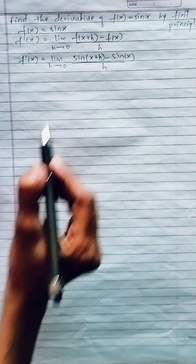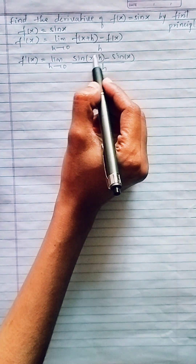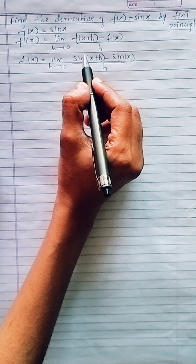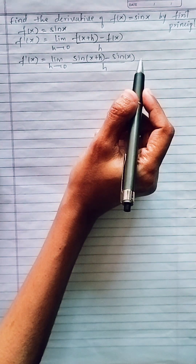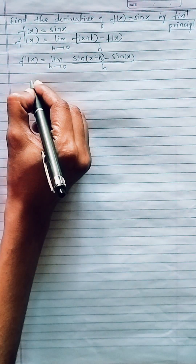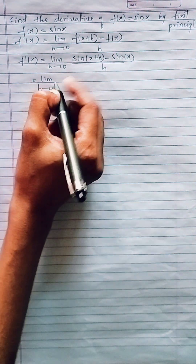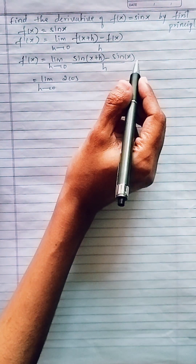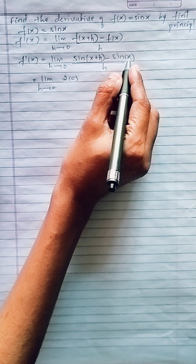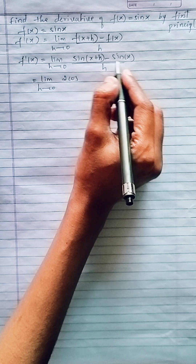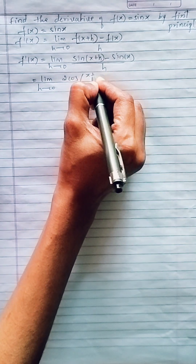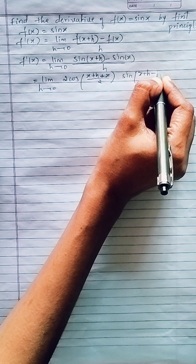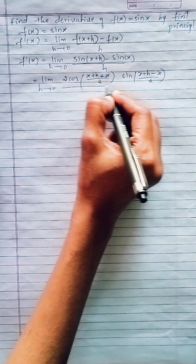Here x + h is considered as A and the second term x as B. We know the formula: sin A minus sin B = 2 cos((A+B)/2) sin((A-B)/2). Applying that formula, this becomes limit h tends to 0 of 2 cos((x+h+x)/2) into sin((x+h-x)/2) whole divided by h.